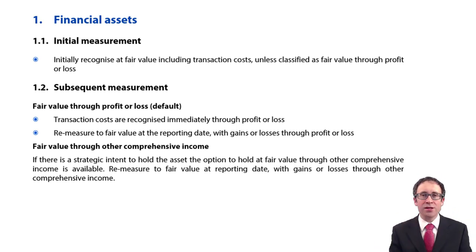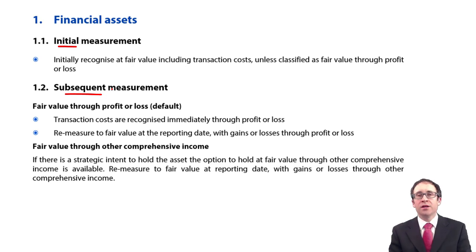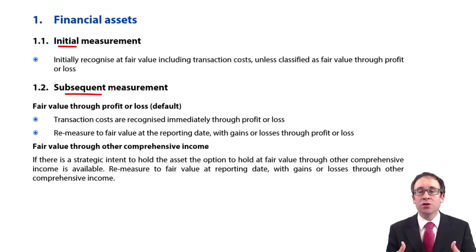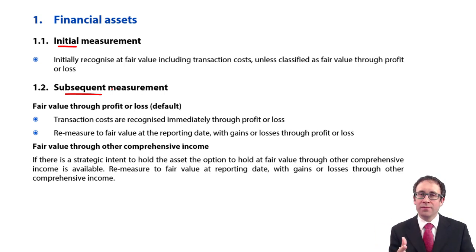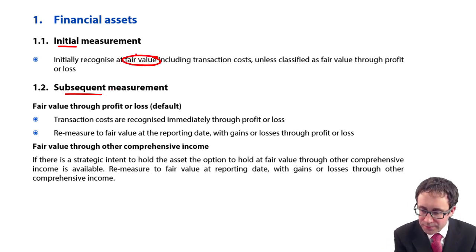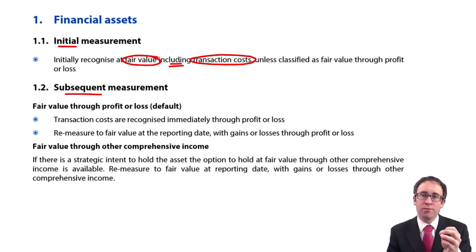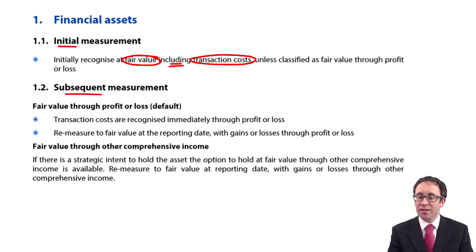So we're looking at financial assets. You can see we've got the usual scenario about what we do initially and then what we do subsequently. Remember, the entries you're thinking about here with your financial assets — you're buying into some other entity's debt or equity, so you're crediting bank and debiting the investment. When we do that initially, you're going to recognise it at fair value, including any transaction costs. If you pay any transaction costs to a broker as part of the purchase of the investment, that is capitalised because they are directly attributable to the purchase of that asset.